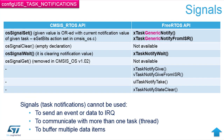The API for signals always performs a logical OR of the new value with the existing signal. We can also clear the signal, and we can wait for the signal in a blocked way in the task.